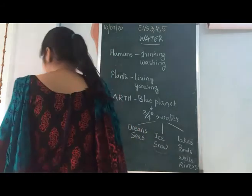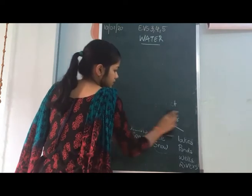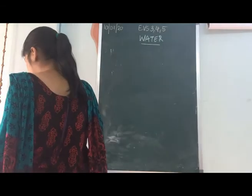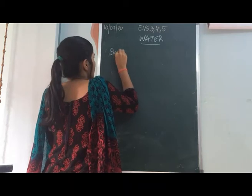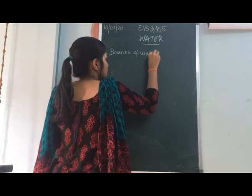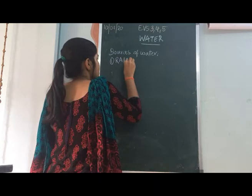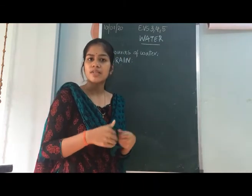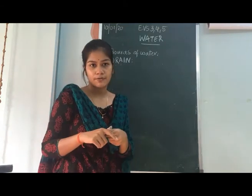Now we will see what are the sources of water. The first source is rain. Rain is the major source of water. When rain falls from the clouds, it gets collected on the ground. So rain is one of the most important sources of water.